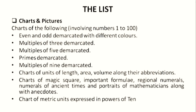Then we can have charts and pictures — charts involving numbers 1 to 100 with even and odd numbers demarcated with different colors, multiples of 3, multiples of 5, primes, and multiples of 9 all demarcated. Also charts of units of length, area, and volume with their abbreviations, charts of magic squares, important formulas, original numerals, numerals of ancient times, and portraits of mathematicians along with anecdotes.